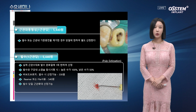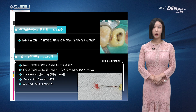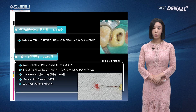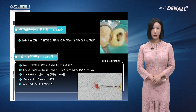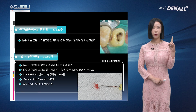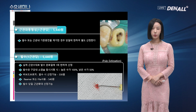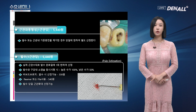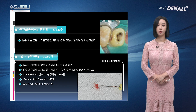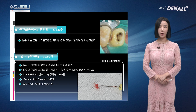다음으로 근관와동 형성 항목입니다. 근관와동 형성(액세스 오프닝) 과정은 1근관당으로 청구되고 5,440원입니다. 발수 또는 근관 내 기존 충전물 제거한 경우 당일에 한하여 별도 산정합니다.